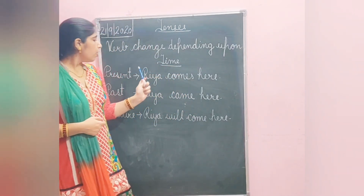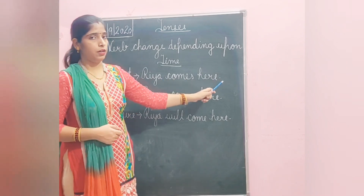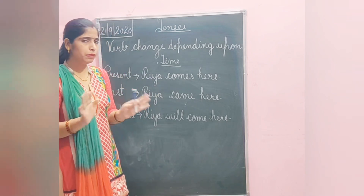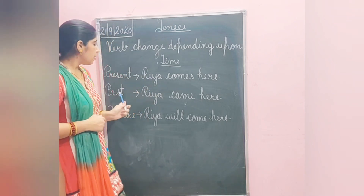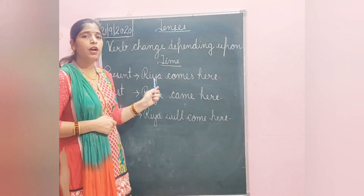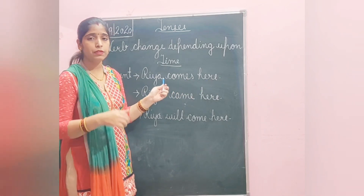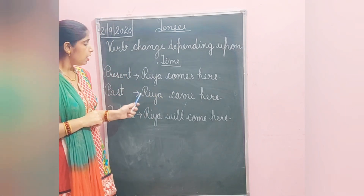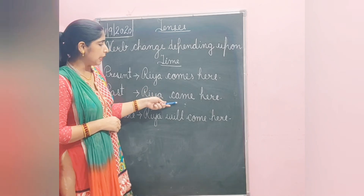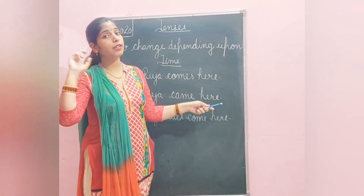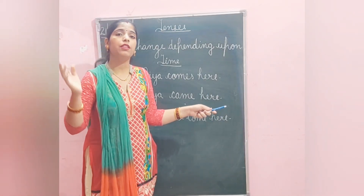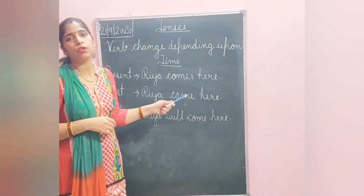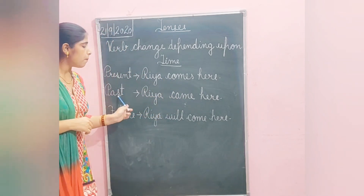See the example: 'Rhea comes here.' The verb here is 'comes.' This action happens right now in the present, so this is an example of present tense. Now the second sentence: 'Rhea came here.' This means Rhea came here in the past — she has already come and gone. So this action was performed in the past.